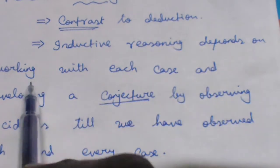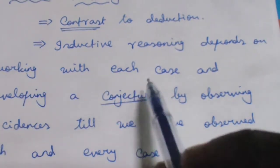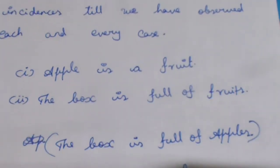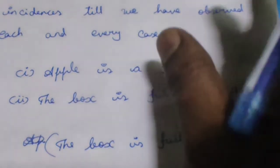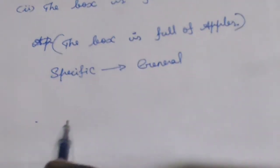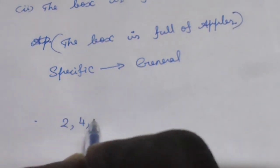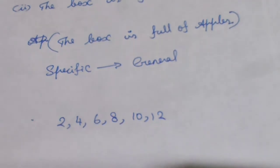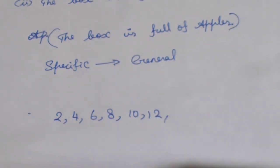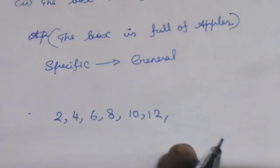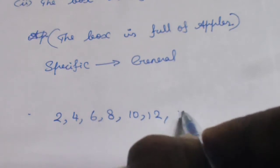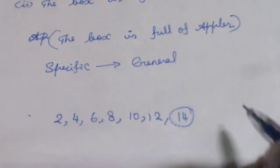Inductive reasoning depends on working with each case and developing a conjecture. A conjecture is an observation based on a pattern. For example, consider the numbers 2, 4, 6, 8, 10, 12. By observing this pattern, we can conjecture that the numbers follow the condition of being multiples of 2.